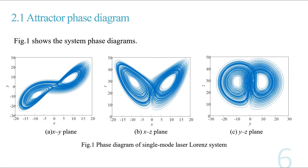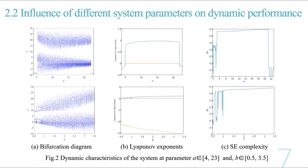According to the above parameters, we can obtain the bifurcation diagram of the system under these parameters. We chose the bifurcation diagram, the Lyapunov exponent, and the complexity diagram of the system. As can be seen from the figures, the bifurcation diagram, the Lyapunov exponent, and the complexity diagram of parameters A and B are completely corresponding.